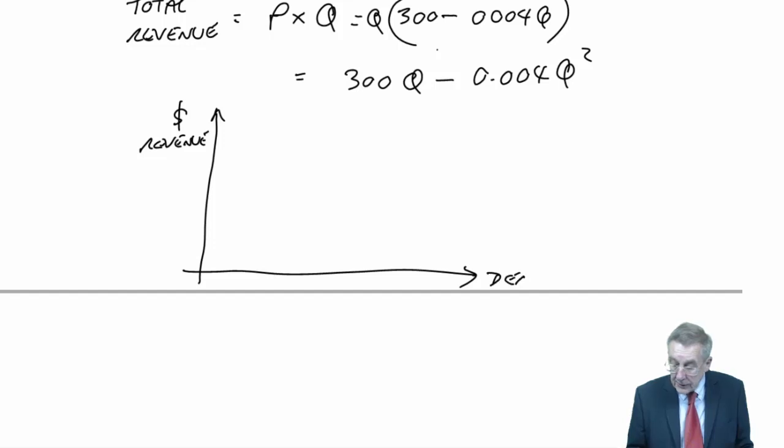If I had a little graph of what would happen to the revenue as the demand changed, well, of course, if we sold no units at all, the revenue would be zero.